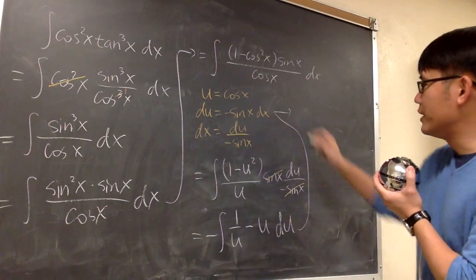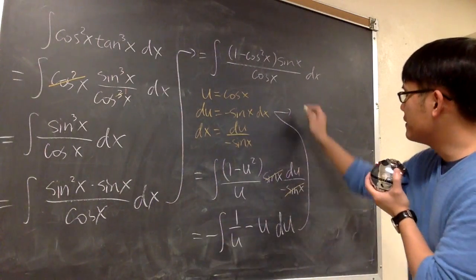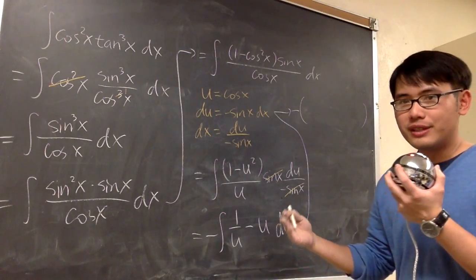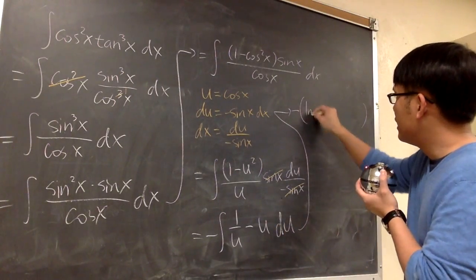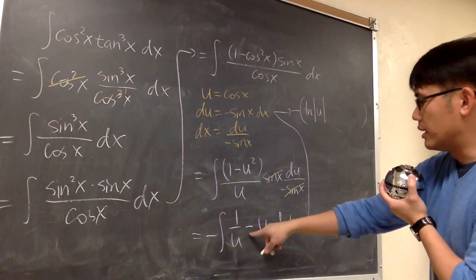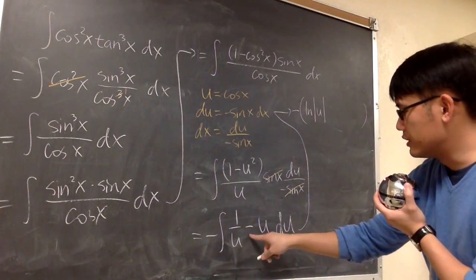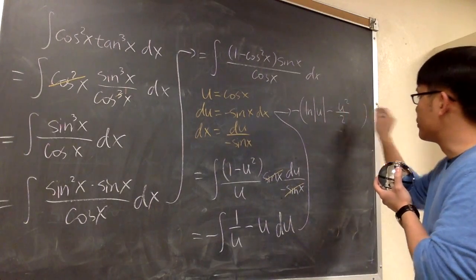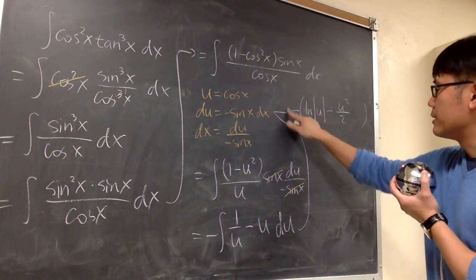And then, let's see how we can integrate that. We have a negative. Let's look at the parentheses. 1 over u is just ln, right? So ln absolute value of u, and then this is just going to be minus u squared over 2. So this is the minus right here.